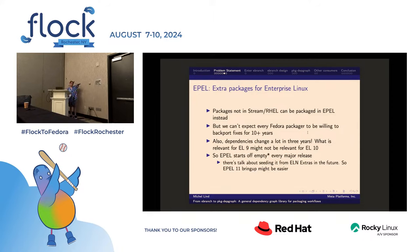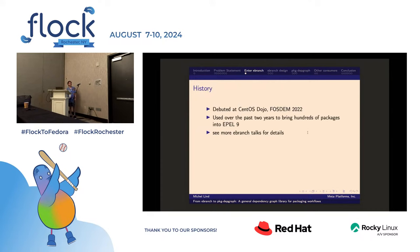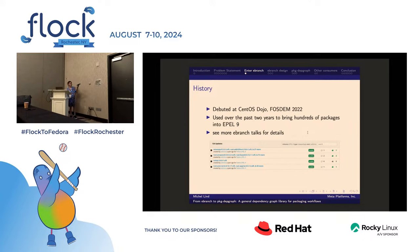Let's talk about making it nicer for the EPEL 10 timeframe — if you're interested, join our ELN meetings every two weeks on Fridays. So the bootstrapping problem: how do we bring in hundreds or thousands of packages? Remember, you might be interested in 10 packages and all the rest are just dependencies you marginally care about. There is a tool called eBranch which I used a lot for bringing up EPEL 9. I presented it at CentOS Dojo at FOSDEM two years ago, and it's been used successfully to bring hundreds of packages.